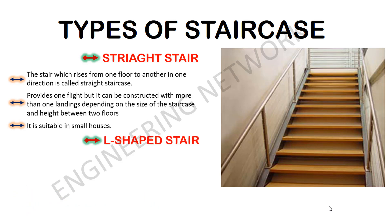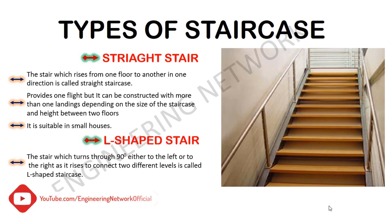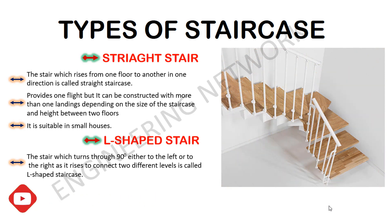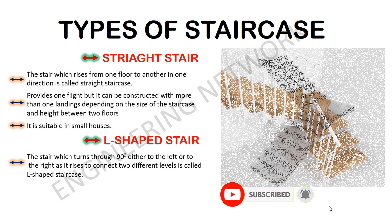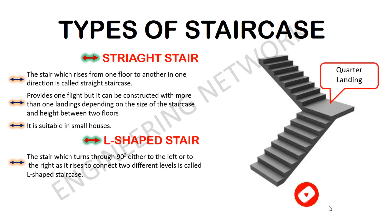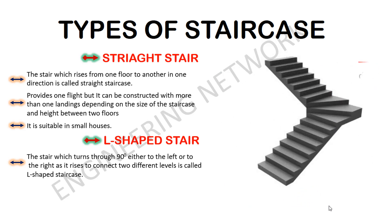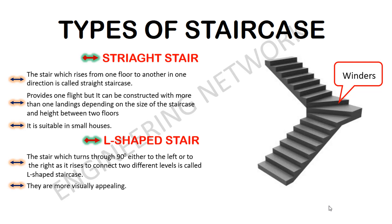The second type of staircase is the L-shaped staircase. The stair which turns through 90 degrees either to the left or to the right as it rises to connect two different levels is called an L-shaped staircase. It is constructed by providing a wide quarter landing, but if the turn space is small, then instead of a wide landing it is provided with winders. They tend to take up less space and can be used in the corner of a room, and they are easier to navigate because of the wider landing that breaks up the flight of stairs.